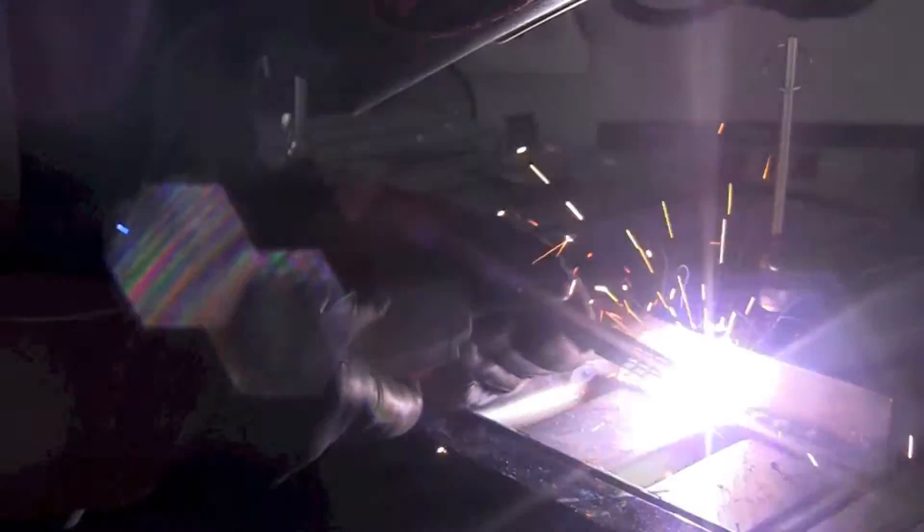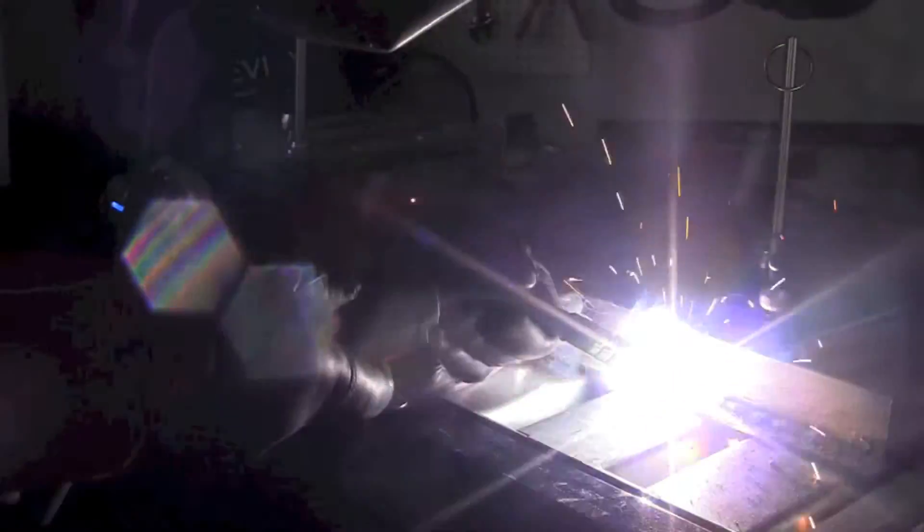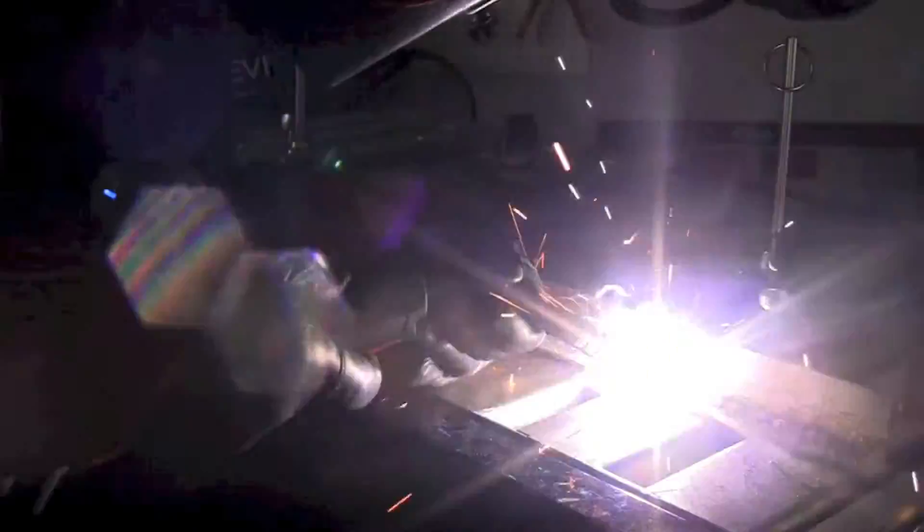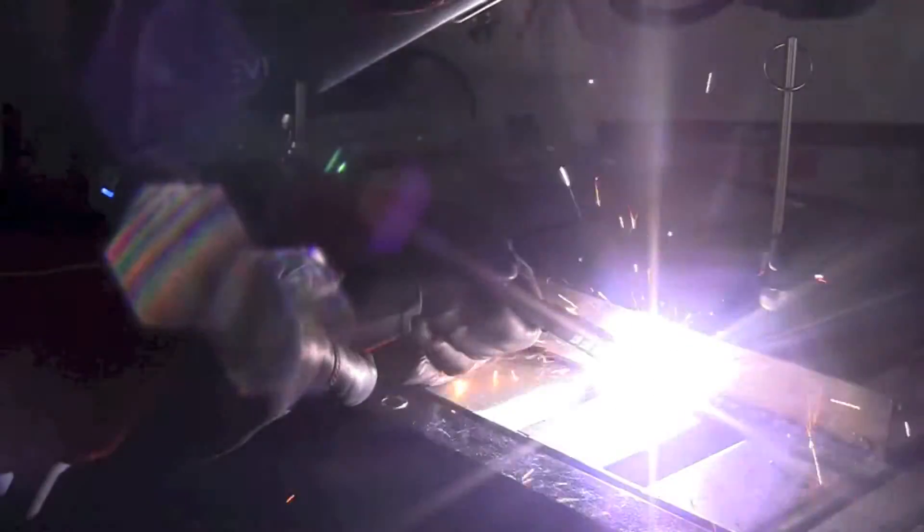Usually with flux core arc welding wire, especially this type which is self-shielding, there's a significant amount of gas and fumes that are developed. If we use the process outdoors, natural ventilation will take care of that for us. If we use it indoors, we've got to take some method to remediate that and get it out of the welder's breathing zone. A downdraft table like this is a perfect application.